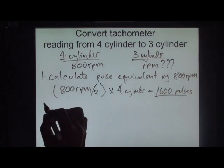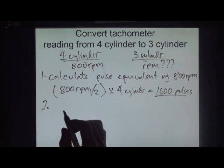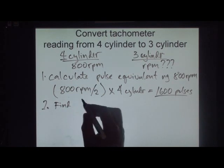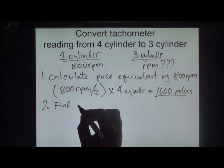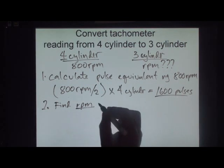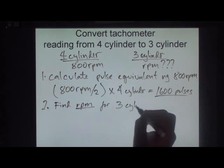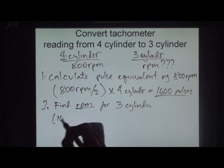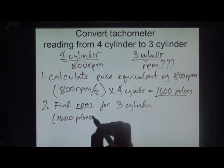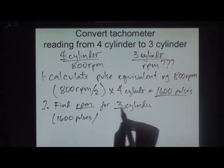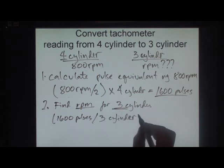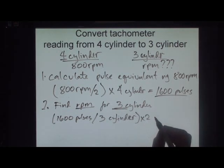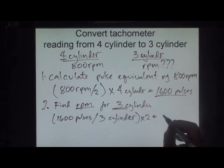So, yung pangalawa natin is find equivalent RPM for 3-cylinder. Meron tayong 1,600 pulses. I-divide natin ito sa number ng cylinder — 3-cylinder for example. And then i-times natin ito ng 2. Ang equivalent nito is 1,066 RPM.